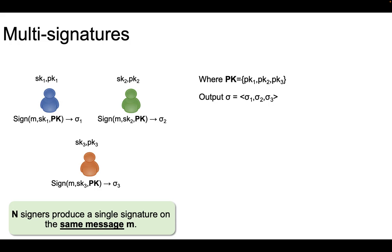The multisignature is simply the collection of the three individual signatures on the message m, computed by each of the signers using their corresponding secret keys. Although this satisfies the definition of a multisignature, it comes with a cost: the size of the signature is linear in the total number of signers. So a common goal when designing multisignature schemes is to come up with schemes that offer signatures that are much shorter.